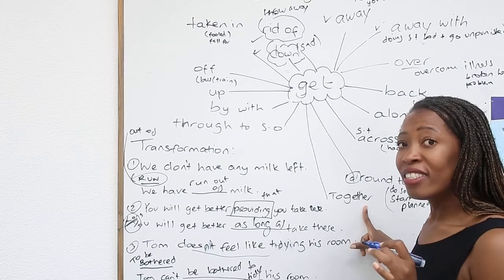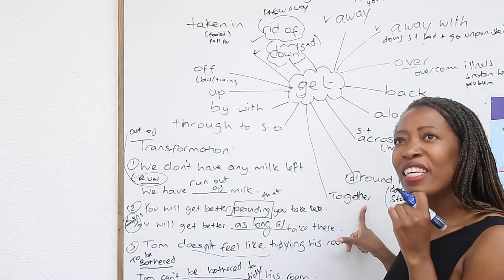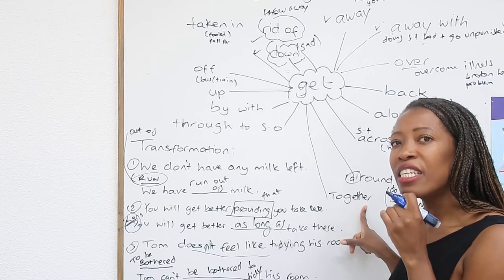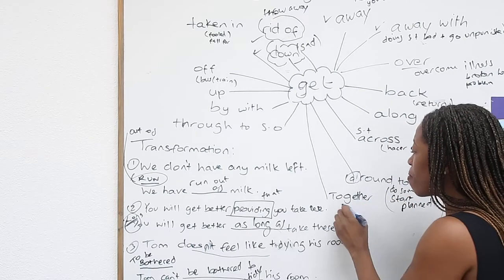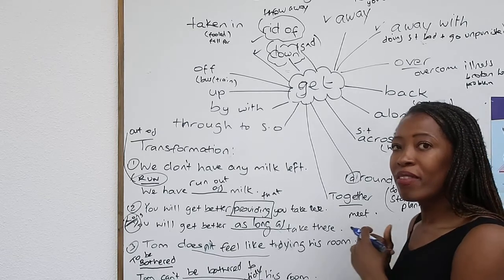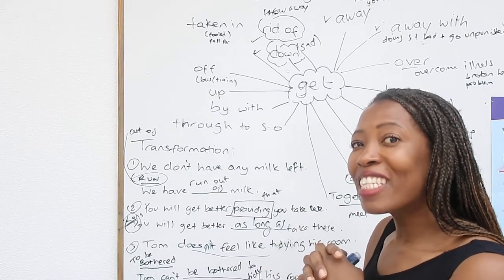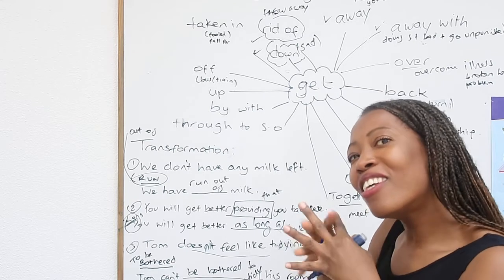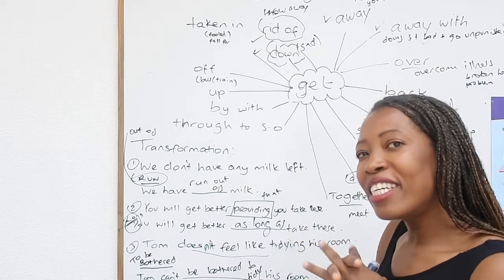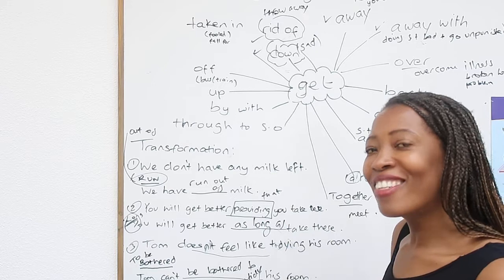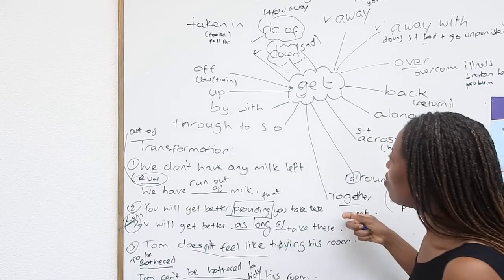Get together. I have to get together with the other teachers this evening. To get together is meet. Or it could be romantic actually. We got together back in June. I mean I started dating. We started dating in June. Get together. To unite.